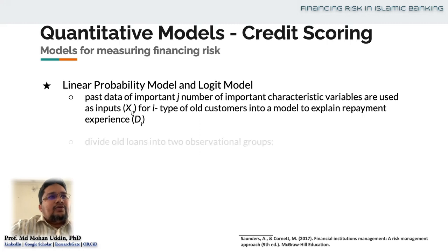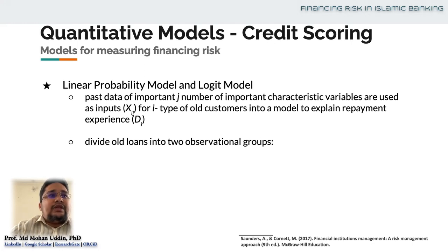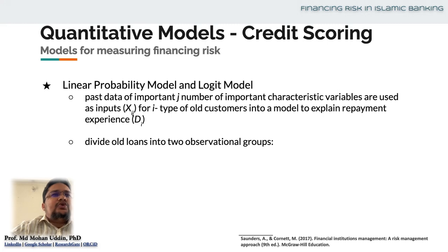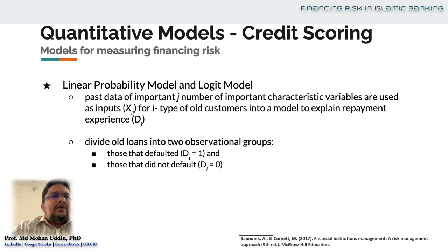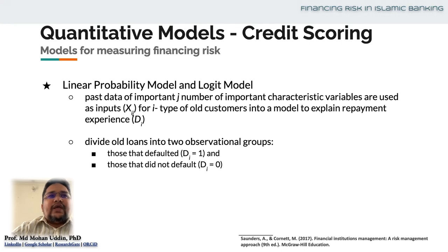As you have understood, we will divide the old loans or old financings into two observational groups: one is those that defaulted and another is those that did not default. If there was a default, we give a value D equals to one; if it did not default, we provide the value D equals to zero. For each and every one of them, we collect the variables x1, x2, x3, etc.